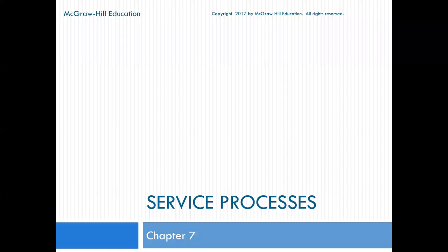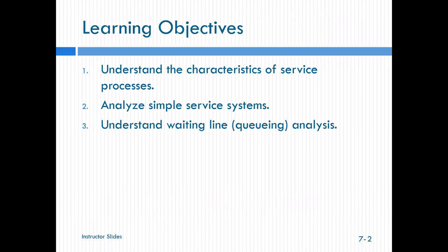Okay, let's go ahead and go through chapter seven service processes. Basically, we're going to have three objectives that we're trying to get to in this chapter. We're just going to be talking about some of the basics of service processes and understanding some of the measures that we use to look at service processes. So we're going to analyze some simple services, and we're going to understand a waiting line analysis.